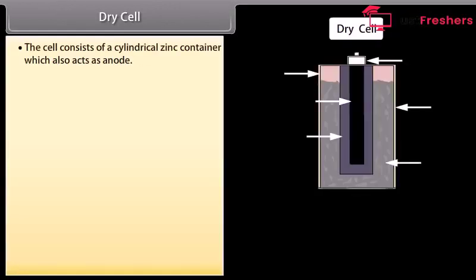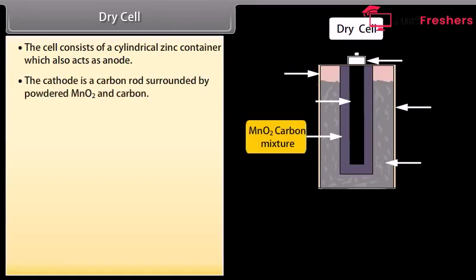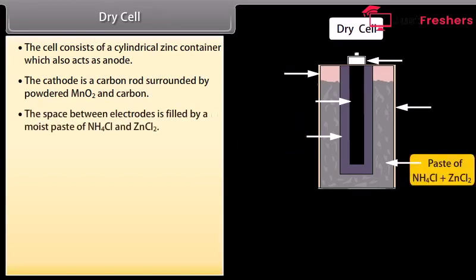Dry cell. The cell consists of a cylindrical zinc container which also acts as anode. The cathode is a carbon rod surrounded by powdered MnO2 and carbon. The space between electrodes is filled by a moist paste of NH4Cl and ZnCl2.